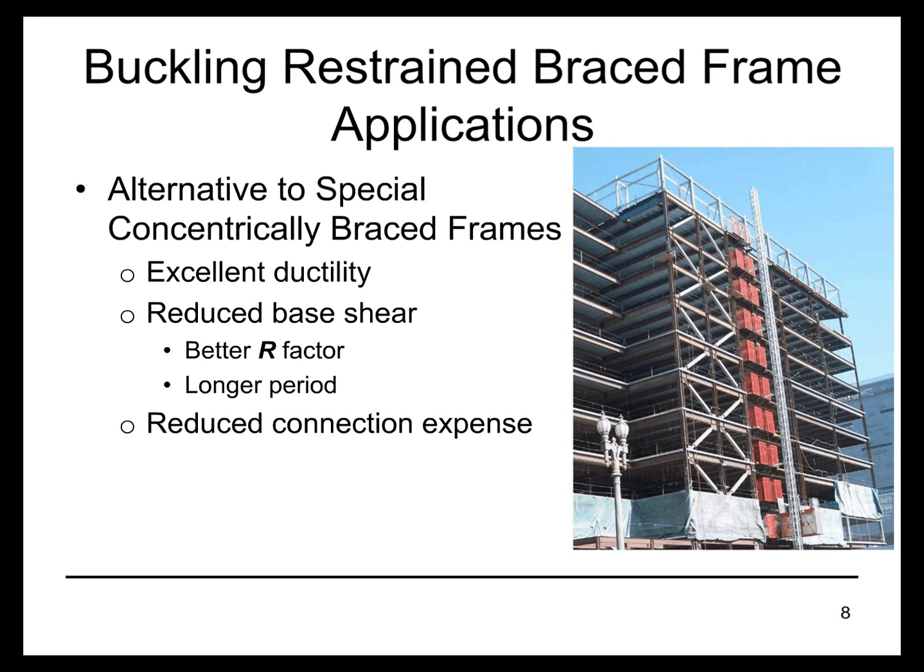Buckling restrained braced frames are generally considered as an alternative to special concentrically braced frames. When thinking about seismic response, the special concentrically braced frame is a common system, but the buckling restrained braced frame provides a good alternative because of the ductility of the braces. From a design efficiency point of view, the R-factor is greater — R of 8 for the buckling restrained braced frame as opposed to 6 for the special concentrically braced frame — and a longer period, reflected in the approximate period formula in ASCE 7 Section 12.8.